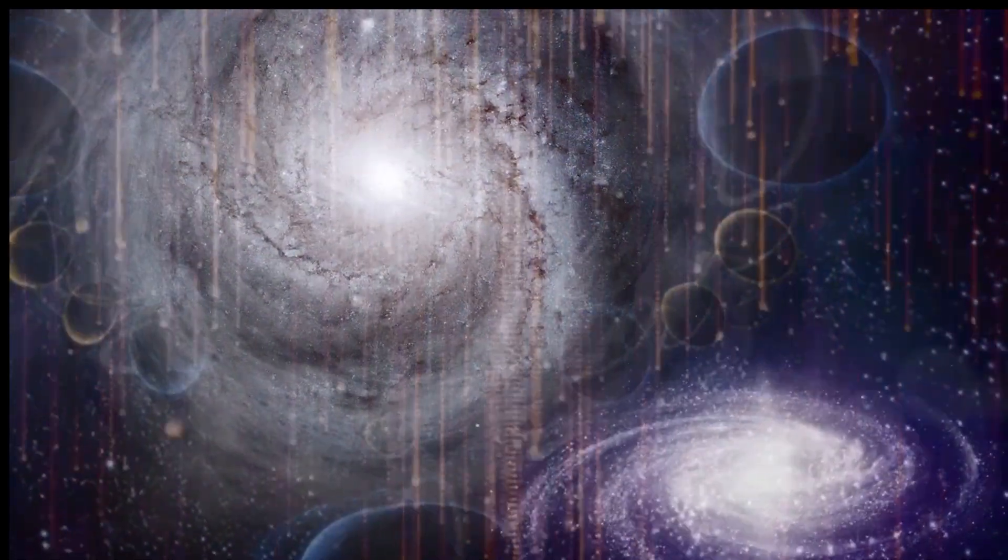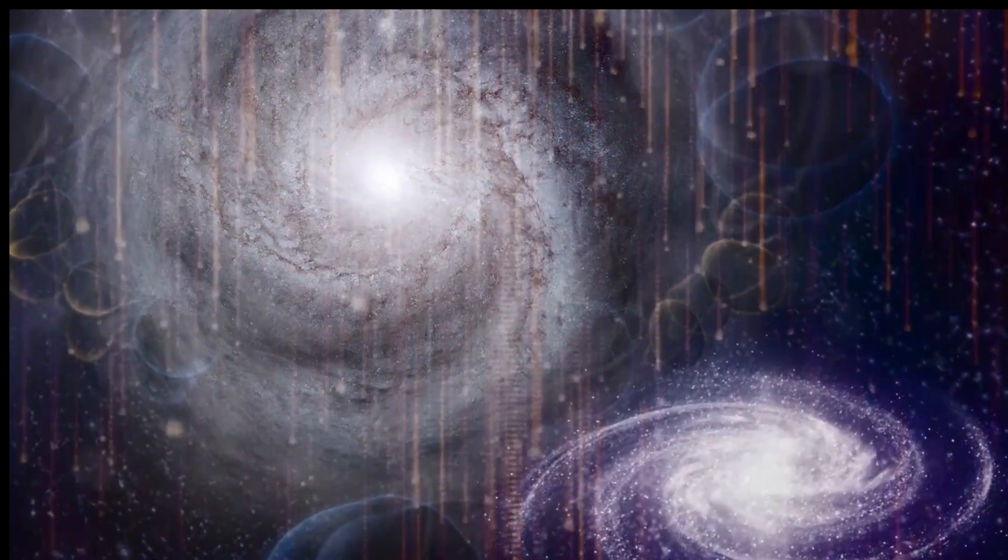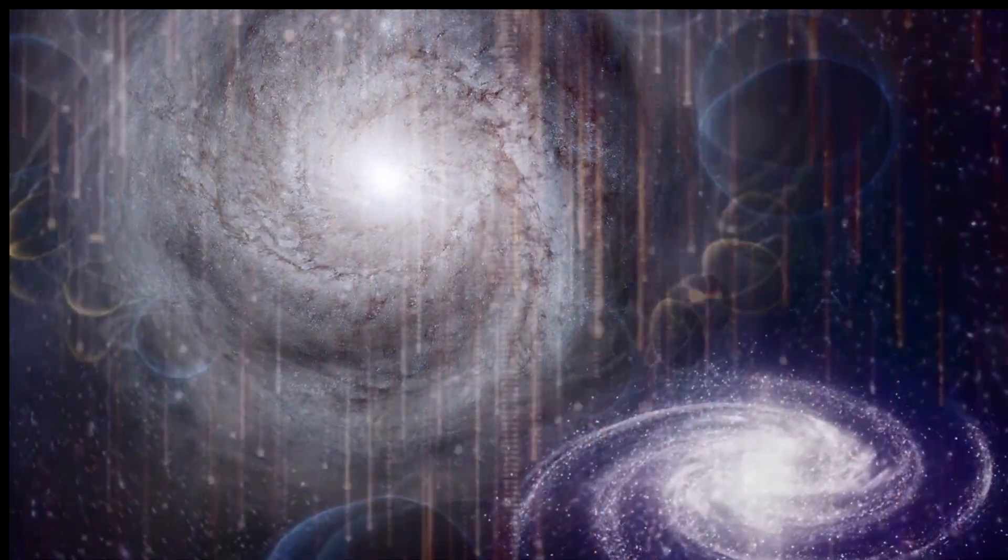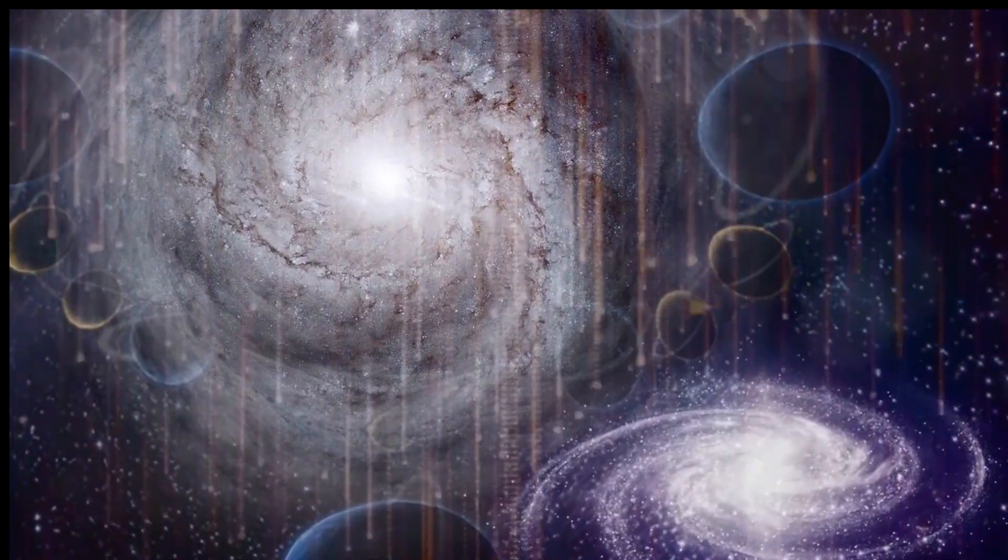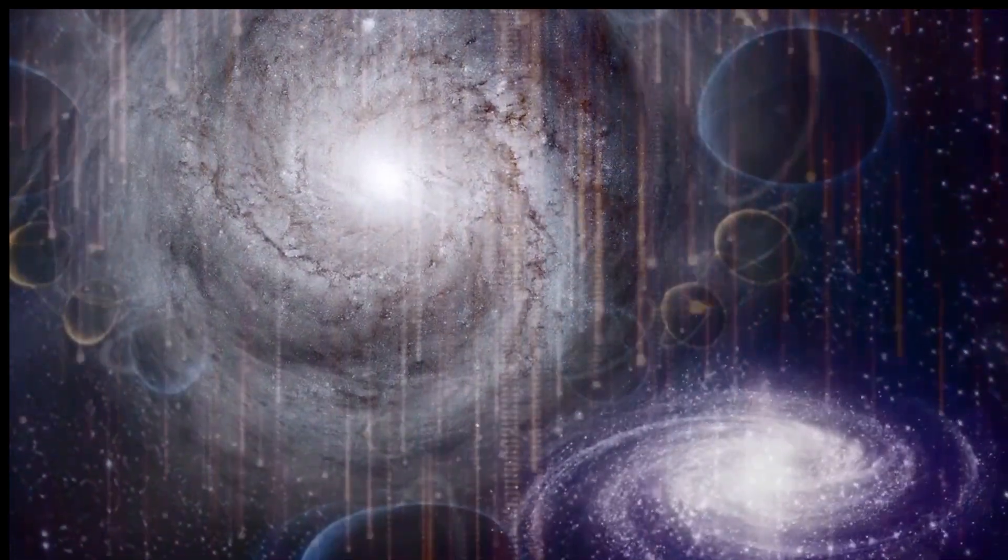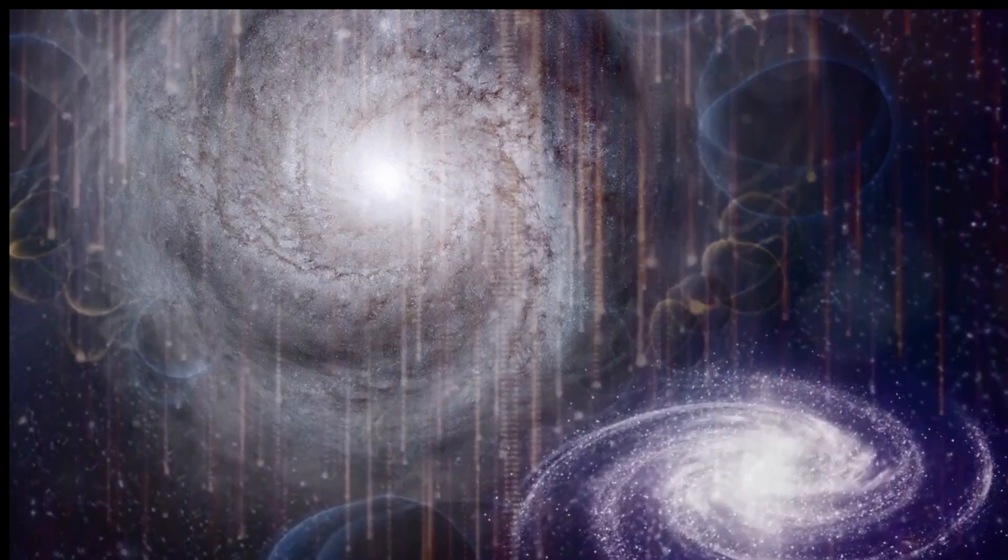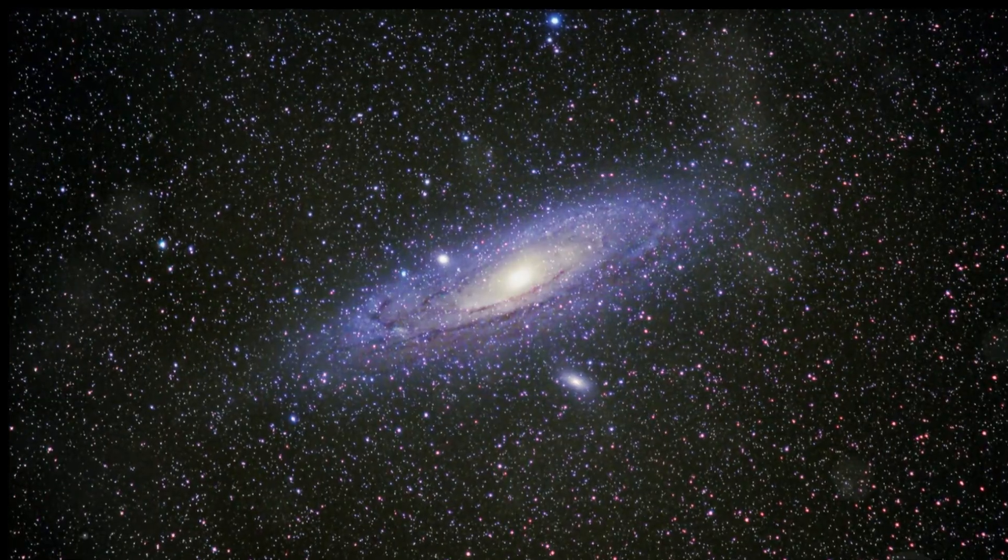By studying its structure and composition, astronomers can piece together the history of our own Milky Way. The comparison between Andromeda and the Milky Way reveals striking similarities and intriguing differences, shedding light on the diverse paths galaxies can take.